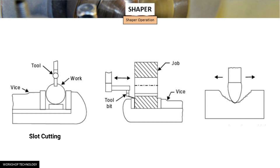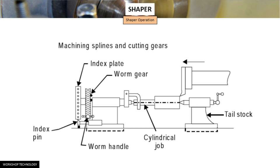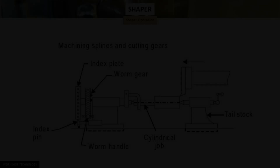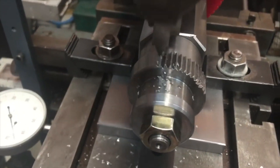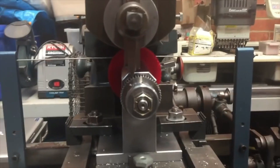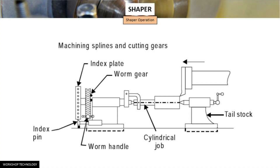Fourth is slot cutting. Fifth is keyway cutting. Sixth is the machining of an irregular surface. And last but not the least, machining splines and cutting gears — yes, we can cut gears using a shaper, and this is a setup for the same.